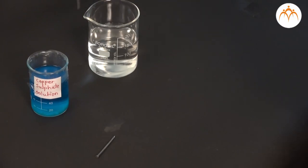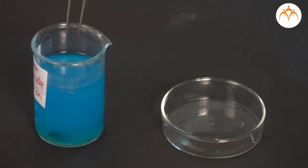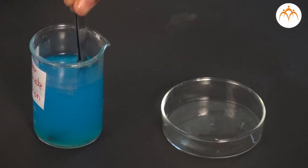Place the iron nail in copper sulphate solution for about 10-15 minutes. Remove the nail from the solution. Observe the change in the colour of the nail.